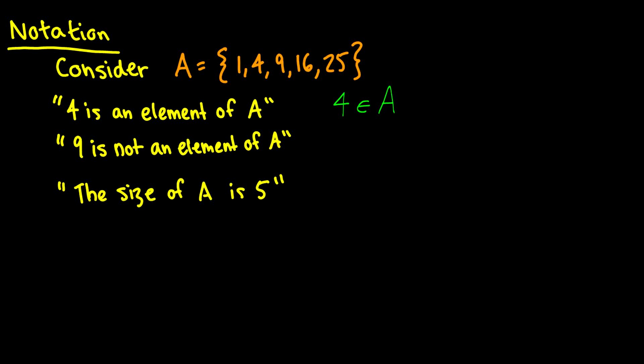So 4 is a member of A. And this thing right here is a member of symbol, or is in the set. It's just a direct translation of is an element of.